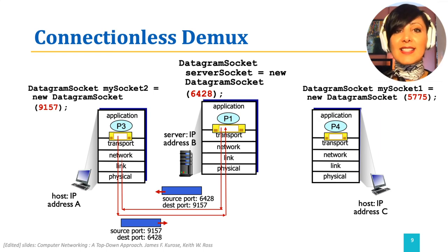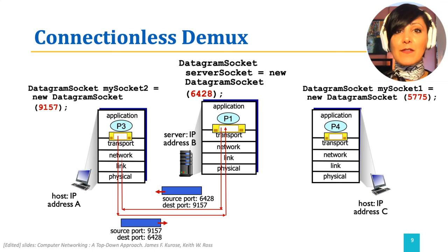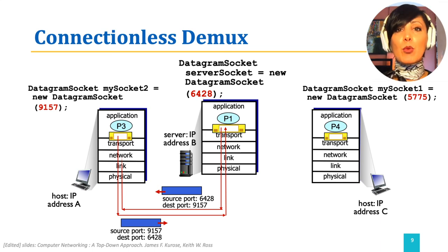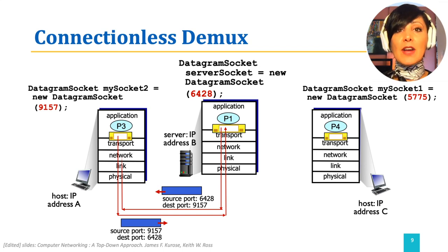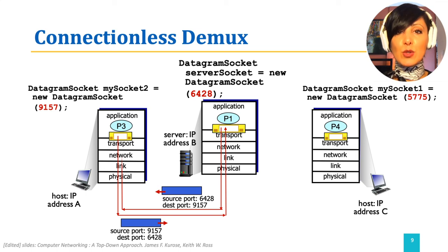Therefore, segments from process P1 on host B to process P3 on host A have source port 6428 and destination port 9157. When arrived on the host with IP address A, the destination port 9157, regardless of the source information, will be used to deliver the segment to process P3.